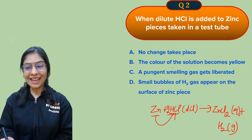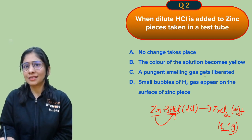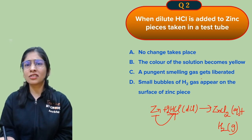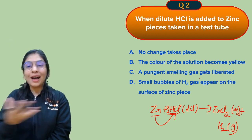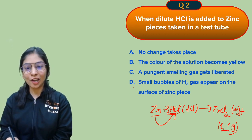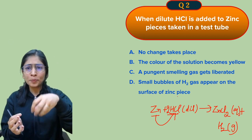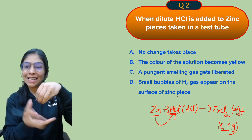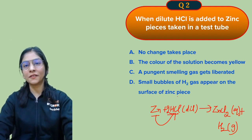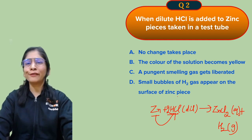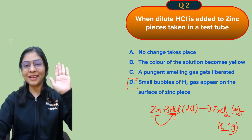Zinc reacts with HCl to give zinc chloride (aqueous solution) and hydrogen gas. Looking at the options: no reaction — not true; color of solution becomes yellow — not true; pungent smelling gas (H₂S, SO₂) — not true. The correct answer is option D: small bubbles of hydrogen gas appear on the surface of the zinc piece. As soon as zinc reacts with acid, hydrogen gas is released and sticks to the surface, and the zinc metal can float.